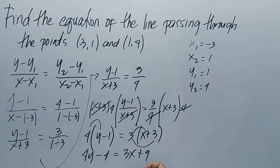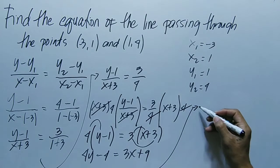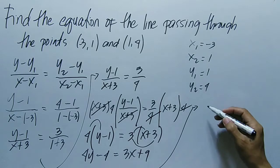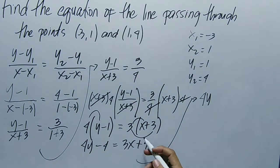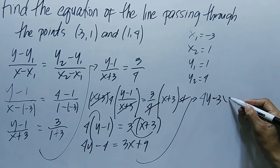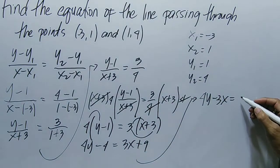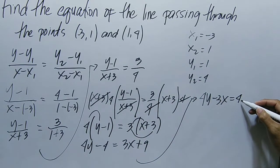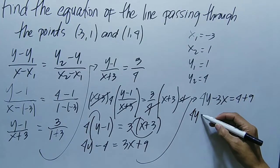So now we can transpose. Transpose the positive 3x to the left side, making it -3x, equals -4, transpose to the right, making it +4, plus 9. So 4y - 3x equals 13.